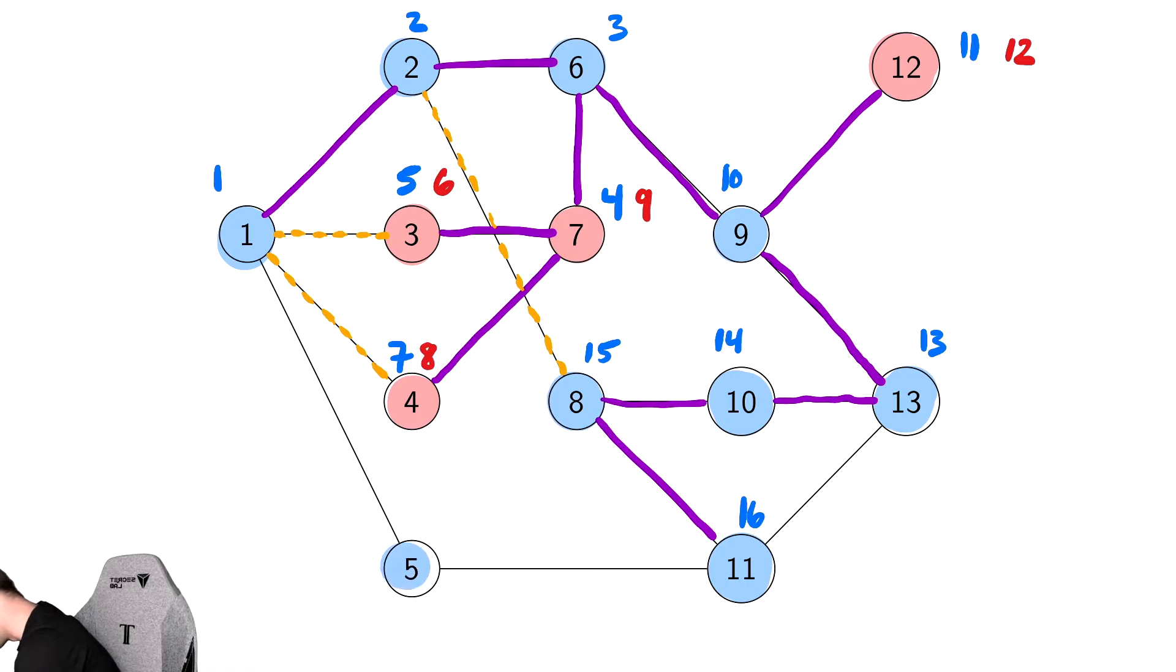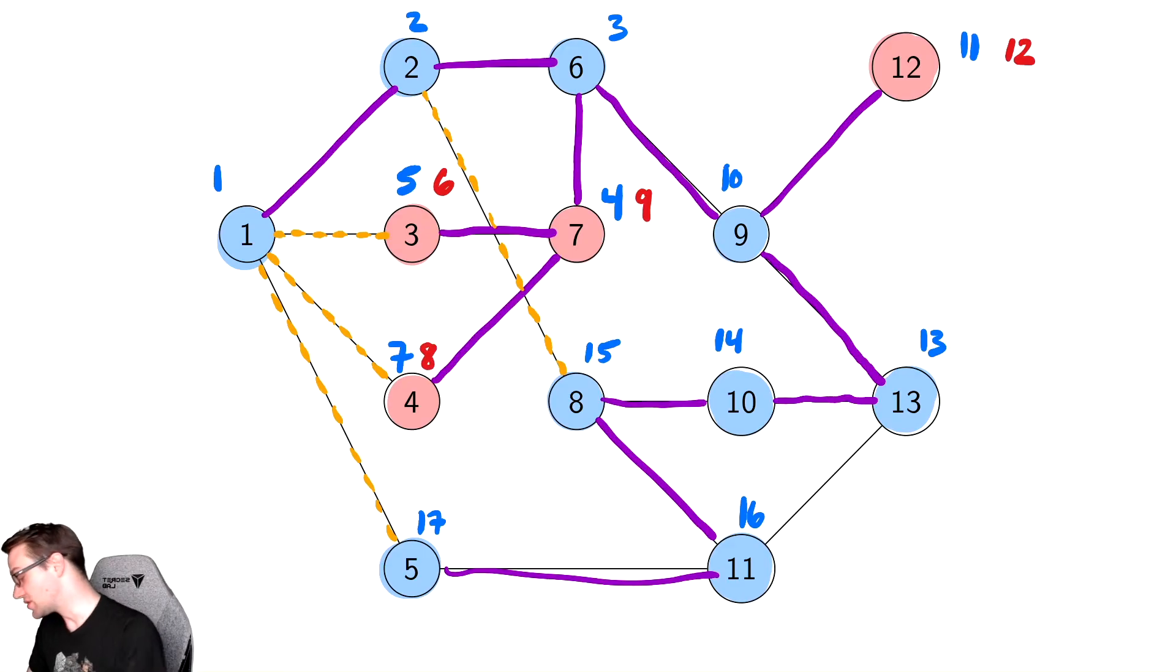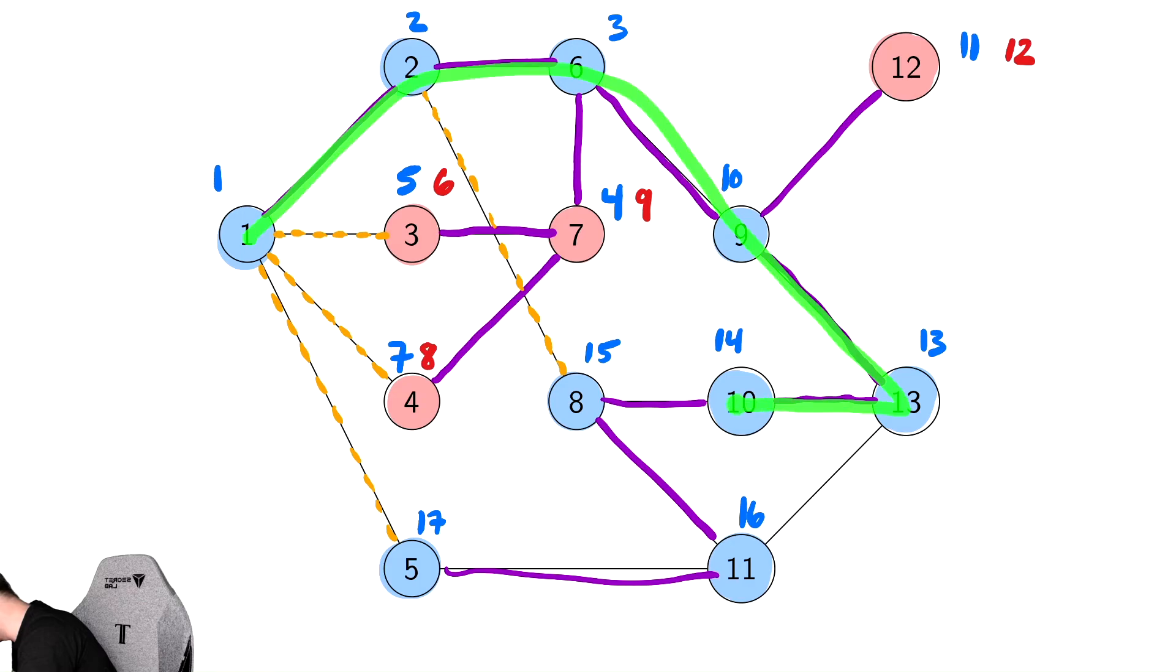From there, we discover 5, which gets a discovery time of 17. And it will then explore from there back to 1. And notice we have this giant cycle here: 1, 2, 6, 9, 13, all the way there. So that's another cycle.